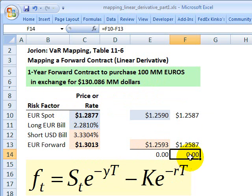The value of the forward here is a function of three risk factors. First of all, it's a function of the spot currency exchange rate, and that's going to be the biggest factor. The biggest driver and the risk of this forward contract is going to be the spot currency exchange rate.